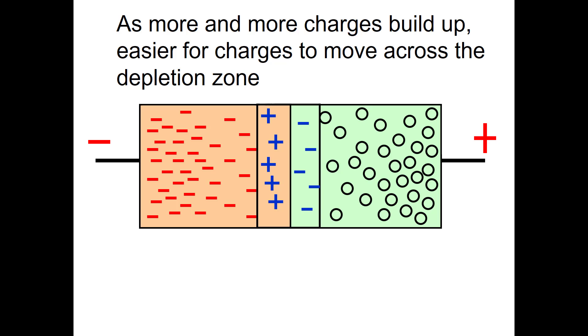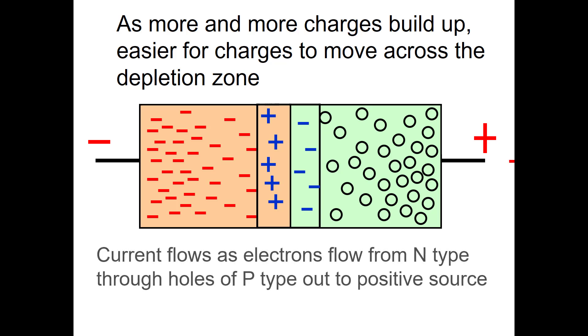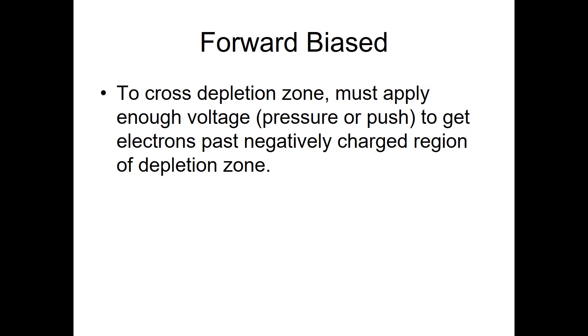As more and more charges build up, you can see the force because of electrostatic repulsion between those similar charges. Those electrons are trying to repel each other. So the force becomes stronger and stronger to push electrons through that depletion zone. As electrons start to move through the depletion zone, they are attracted to those positive holes. And if the positive charge is strong enough, it will pull those electrons all the way through, creating an electric current. So current flows as electrons flow from the N-type through the holes of the P-type and out to the positive source. To cross the depletion zone, you have to apply enough voltage or enough pressure or push to get the electrons past that ionized depletion zone.